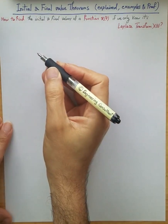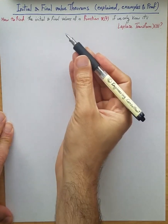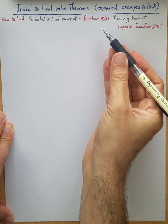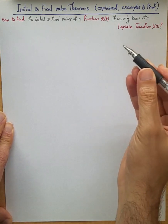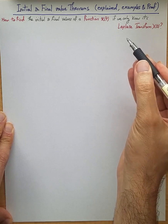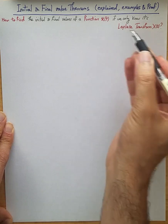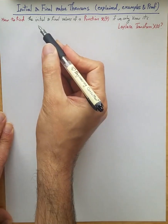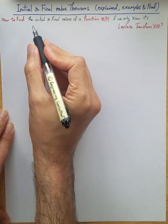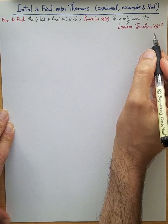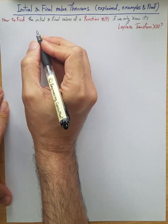Initial and final value theorems explained, with some examples and proof. Here we want to find the initial and final values of a function or signal x of t as a function of time, if we only know its Laplace transform x of s in the s domain. This has a lot of application in circuit analysis and systems.